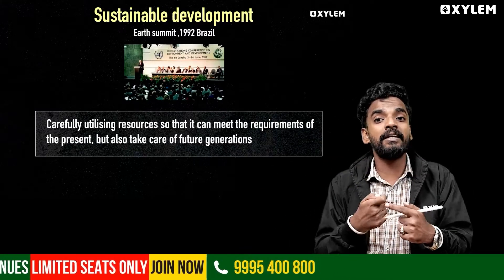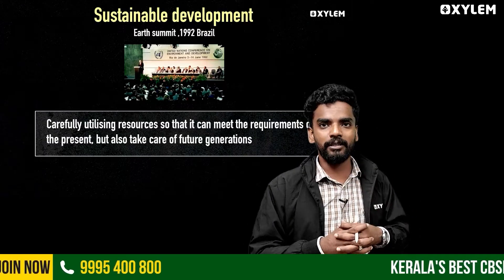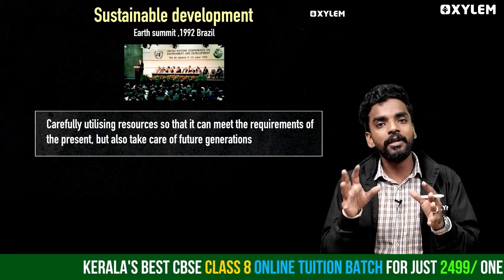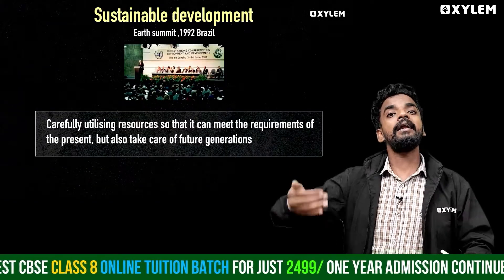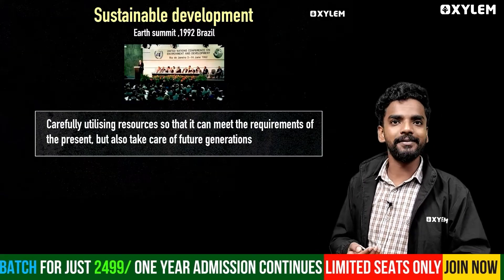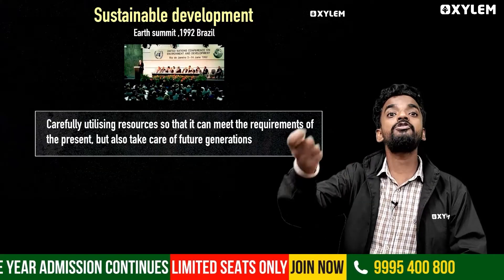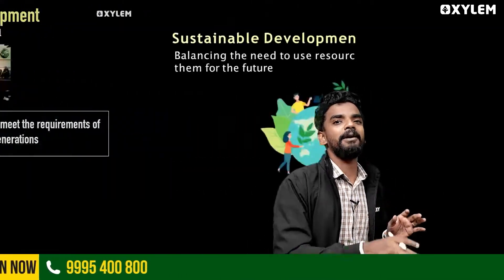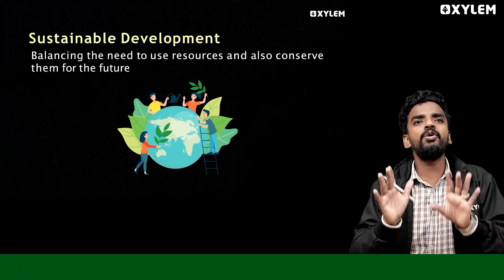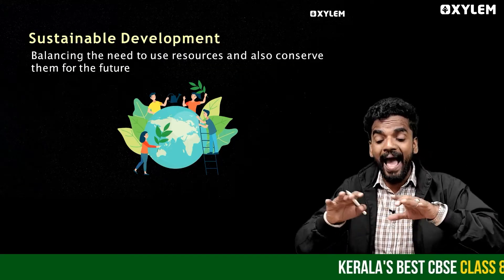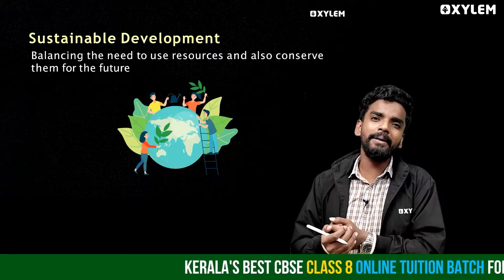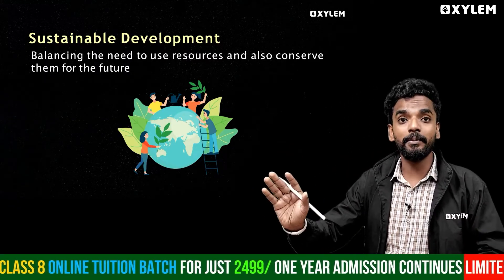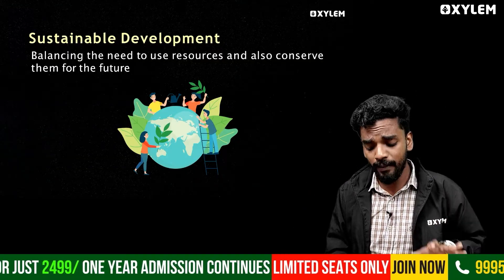We need to use resources carefully so that the future generation can also benefit. This is the concept of sustainable development — balancing the need to use resources now while conserving them for the future. Sustainable development means we use resources but also preserve them for future generations. We should balance the use and conservation of resources.